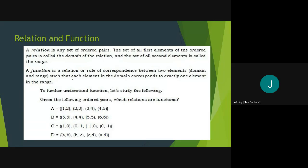So to further understand the function, let's try this. Ordered pairs. A, B, C, D are relations. Which relations are functions? A is a function. B is a function. C is not a function. Why? Because one is to zero, and then negative one is to zero again. So it repeated. Therefore, this is not a function. While D is also not a function because C is to D and then A is to D. It's not a function.